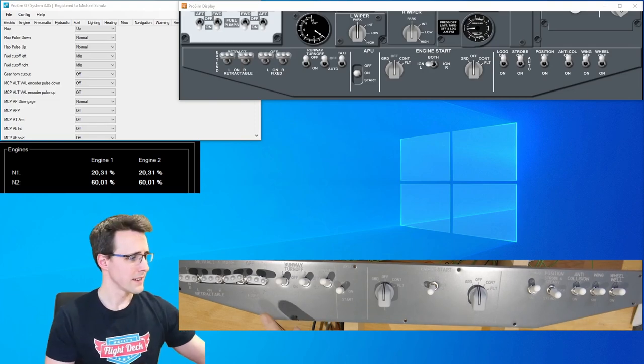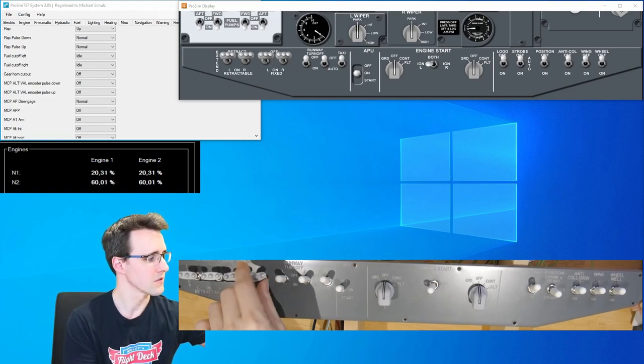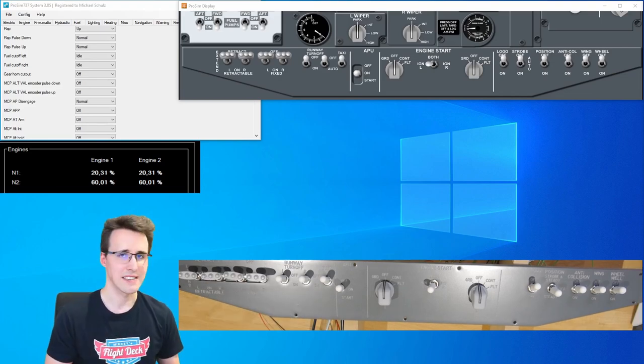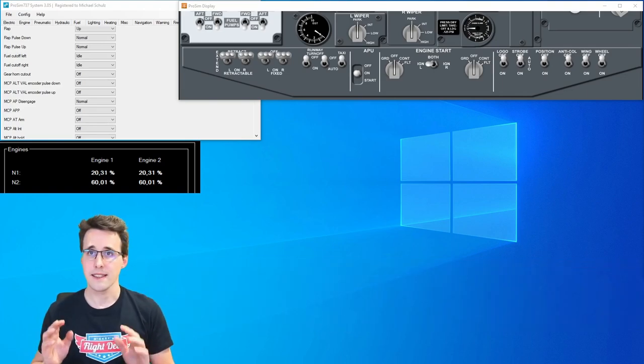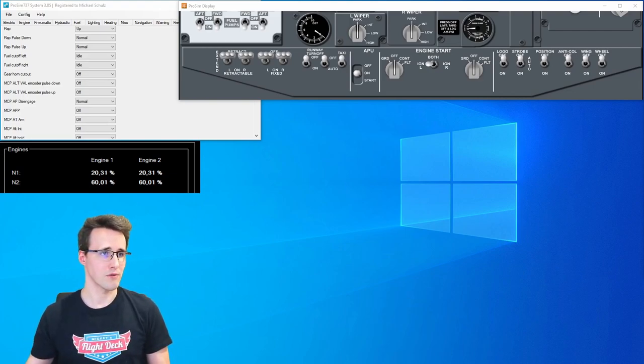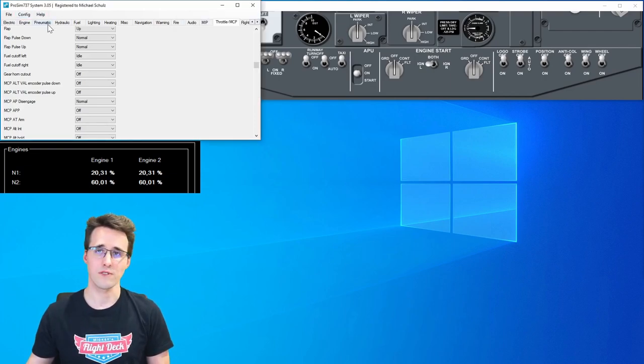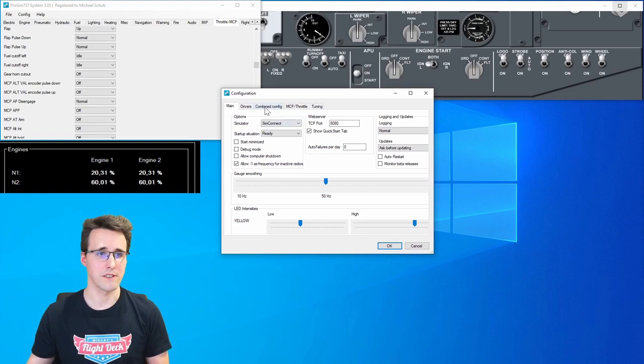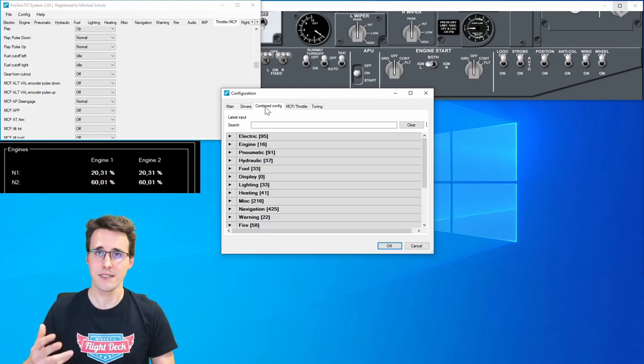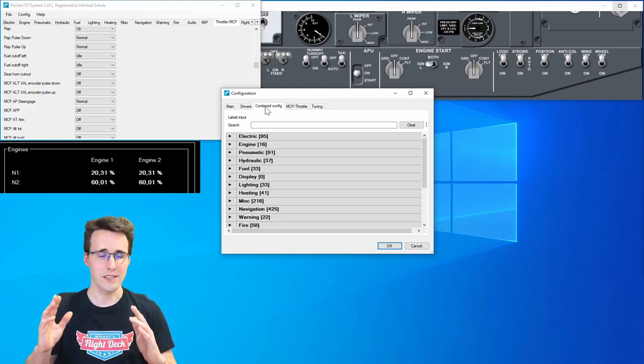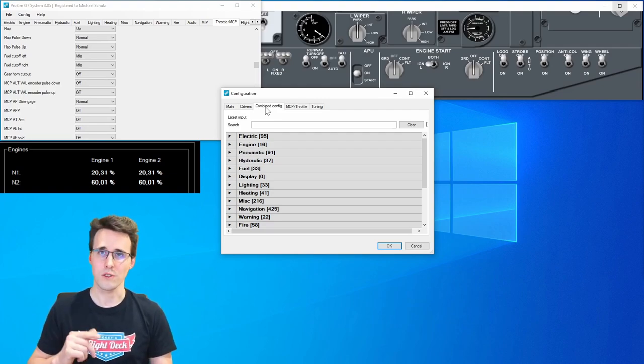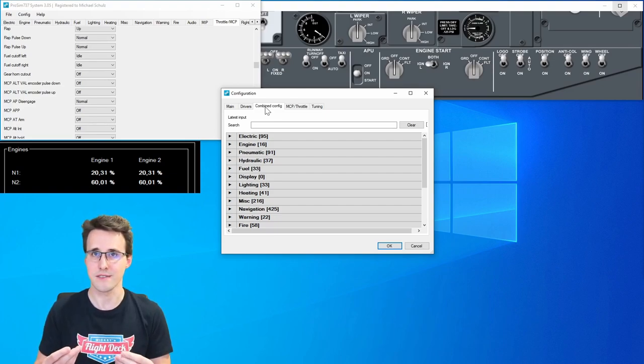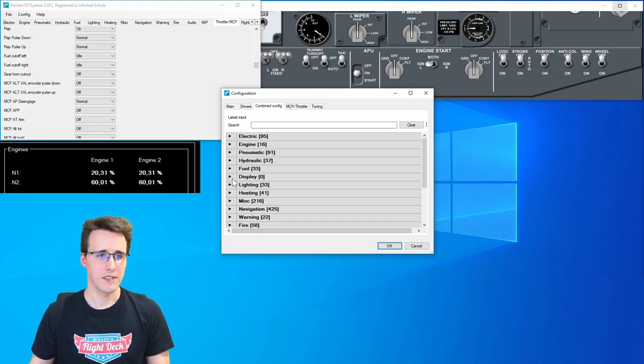A little bit annoying is here that the shaft of the switches here is turning. So these switches can turn here a little bit. But I think this is something I have to live with when I use 80 cent switches. Let's have a short look where you can configure all these things in ProSim. You will find this here in the ProSim system application under config and configuration. And there you go to combine config. By the way, I'm not showing everything here now in detail. I have made dedicated videos where I go into detail into programming MobiFlight ProSim and where you can find all these things. So watch these videos when you want to know more and more detailed information about this.